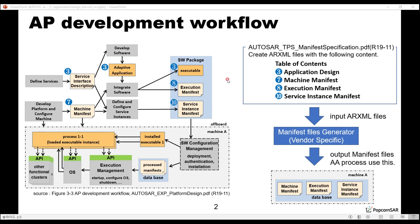There are four essential developing parts in adaptive platform, which respectively correspond to four chapters of TPS specification. They are Chapter 3, Application Design; Chapter 7, Machine Manifest; Chapter 8, Execution Manifest; and Chapter 10, Service Instance Manifest.